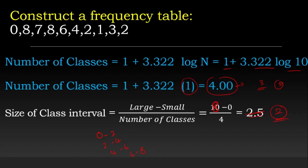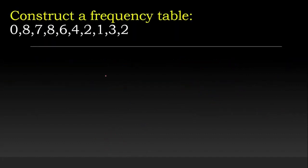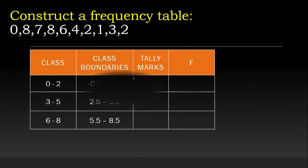Let's quickly work through a smaller example to construct a frequency table. Given data: 0, 8, 7, 8, 6, 4, 2, 1, 3. We set up the frequency table with classes: 0 to 2, 3 to 5, and 6 to 8, and then make class boundaries.